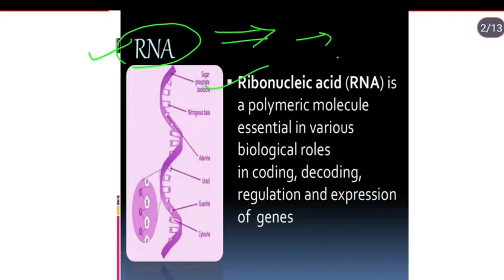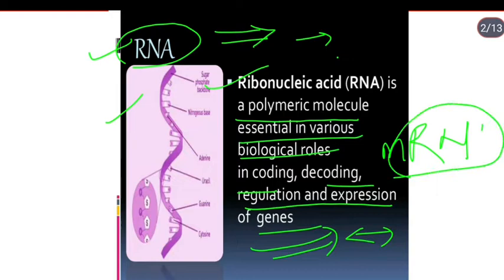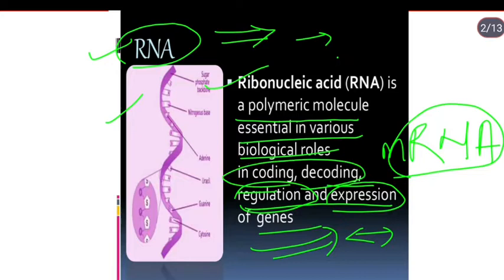Ribonucleic acid, RNA - it contains ribose sugar, not deoxyribose. It's a polymeric molecule essential in various biological roles including coding, decoding, regulation and expression of genes. RNA helps with gene expression and regulation. mRNA helps with protein synthesis.